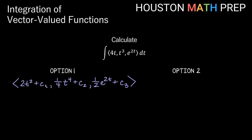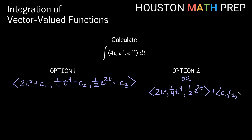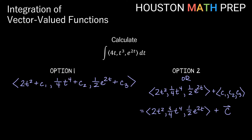Another way to deal with these constants would be to pull them all out and create a vector with these constants by themselves. So we could also write this as the vector 2t squared, 1 fourth t to the 4th, 1 half e to the 2t, plus a vector that has c1, c2, and c3 in it. An even shorter way is to write it as that function vector plus a constant vector C with three components — one for each component of the function.